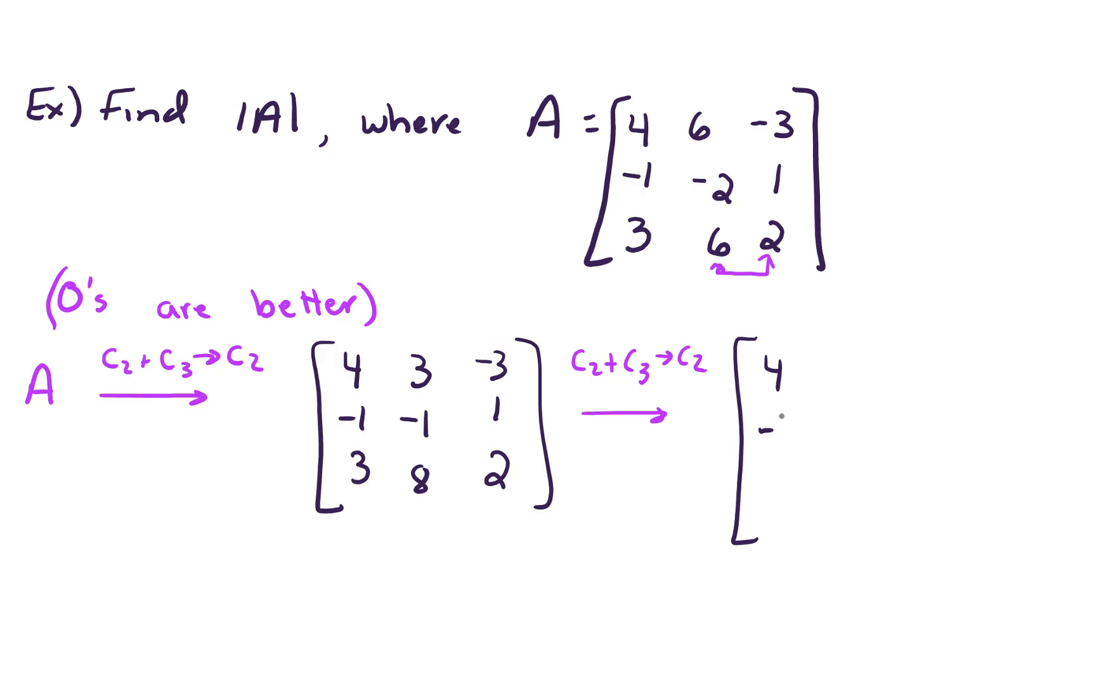So we have a 4, negative 1, 3. Third column is unchanged, and our second column becomes a 0, 0, 10. And that looks really good, because if we were to expand along the second column, we've got lots of zeros, and our computations will be a lot easier.